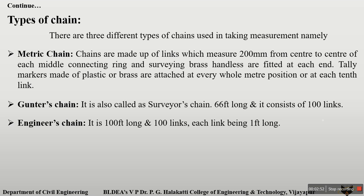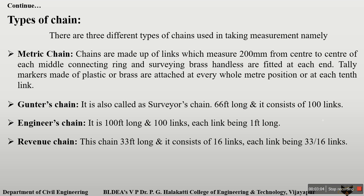Next is the engineer's chain. It is 100 feet long with 100 links, so each link equals 1 foot. The last one is the revenue chain. It is 33 feet long and consists of 16 links, so 33 divided by 16 gives the length of one link. Revenue chain is generally used where linear measurements require higher accuracy.